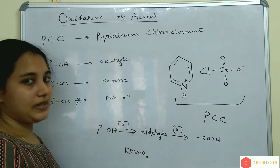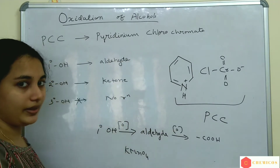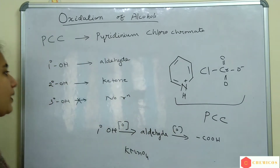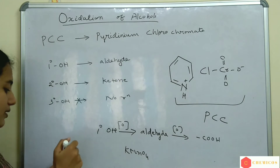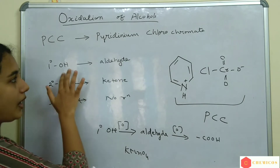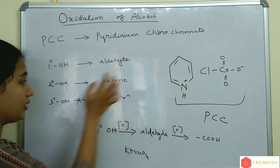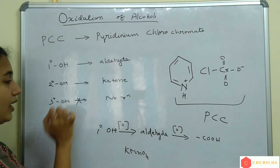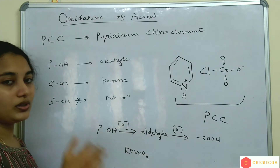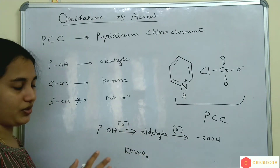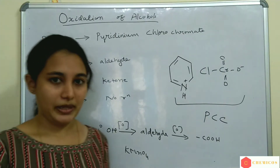So if we want an aldehyde, we can use PCC over other oxidizing agents. PCC oxidizes a primary alcohol to an aldehyde, a secondary alcohol to a ketone, and tertiary alcohol doesn't undergo reaction.